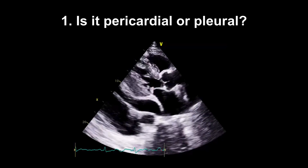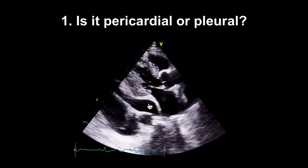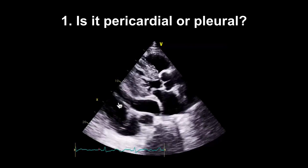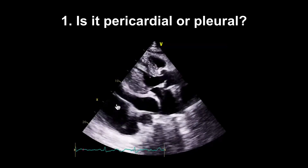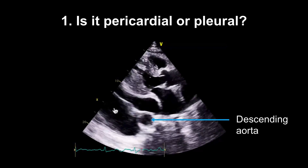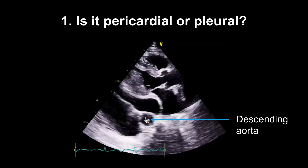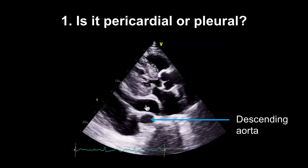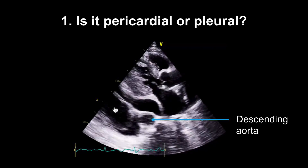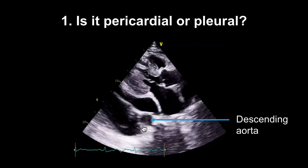The first question is: is it really pericardial and not pleural? This patient actually has both — a pericardial effusion here and a pleural effusion there. The way to distinguish between them is to check the position of the descending aorta. A pericardial effusion will be anterior to the descending aorta, and a pleural effusion will typically come behind it and may extend even further behind.